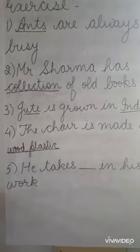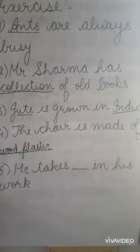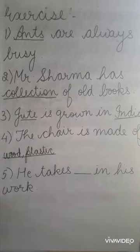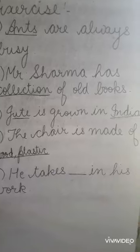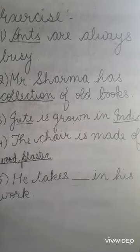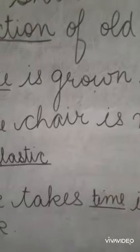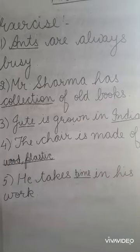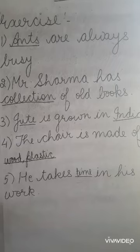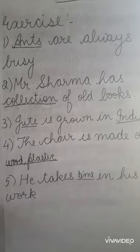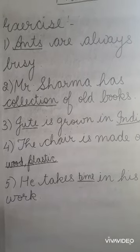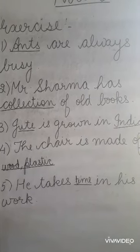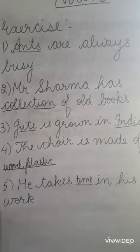The fifth sentence: 'He takes ___ in his work.' Here we can write time, because it is an abstract noun. In the next video, we will see the rules to change the number of nouns and the gender of nouns.